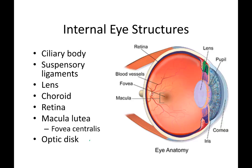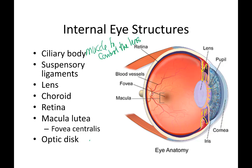The internal eye structures include the ciliary body, located around the lens behind the iris. It is a muscle that causes the lens to change shape so we can focus. The suspensory ligaments are tiny ligaments attached directly to the lens which connect to the ciliary body. Light will come through the cornea, through the anterior space, through the pupil, and then through the lens, which bends to focus the image to the proper position in the back of the eye.